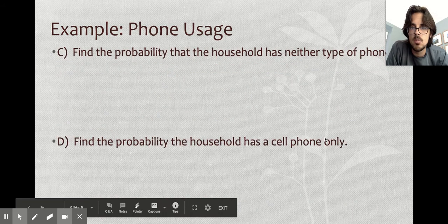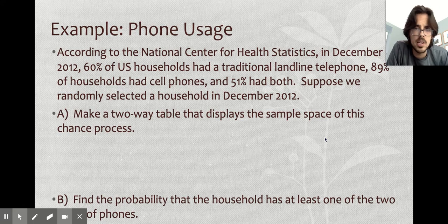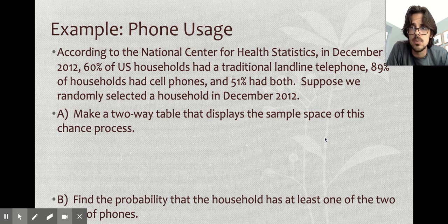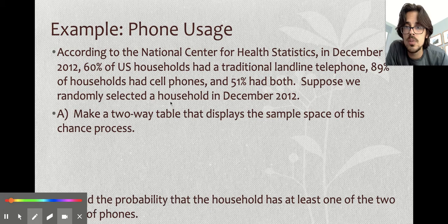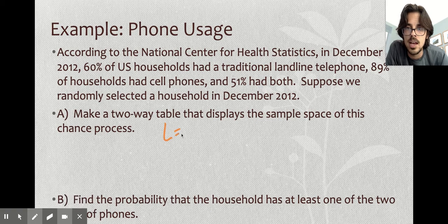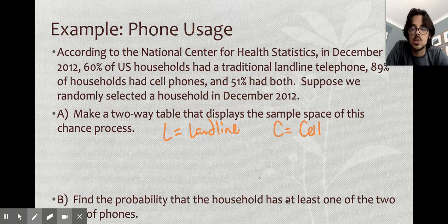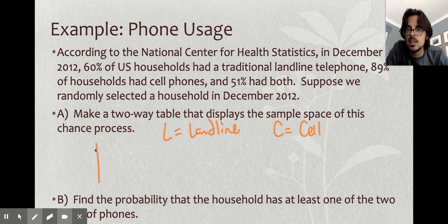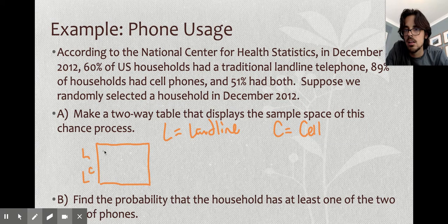We have one more example right here with a bunch of parts to it. Fresh problem. We have 60% of households in the U.S. with a landline phone. And I bet that's gone down since 2012. And 89% with cell phones. 51% have both. So our two events in this problem that we care about, we have L is that they own a landline. And then we have, I'll do C for cell phone. It doesn't really matter what letters you choose, just as long as you define it. And in my little two-way table right here, I'm going to have L, I'm going to have not L, I'm going to have C, and I'm going to have not C.